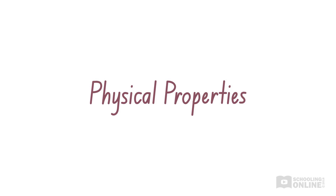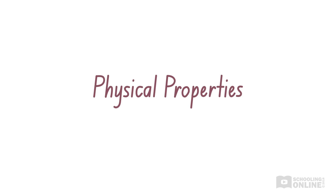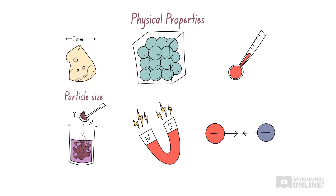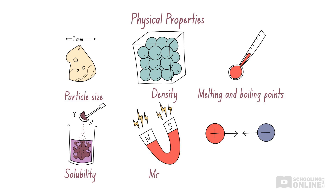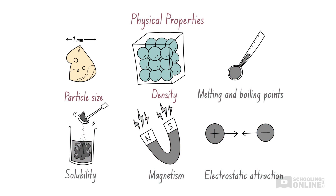We need to consider the physical properties of a mixture when selecting separation techniques. Physical properties include particle size, density, melting and boiling points, solubility, magnetism and electrostatic attraction. In a mixture, pure substances retain their distinct physical properties, and any differences in these physical properties can be used to separate mixtures. In this lesson, we will focus on separation techniques that rely on differences in particle size and density.